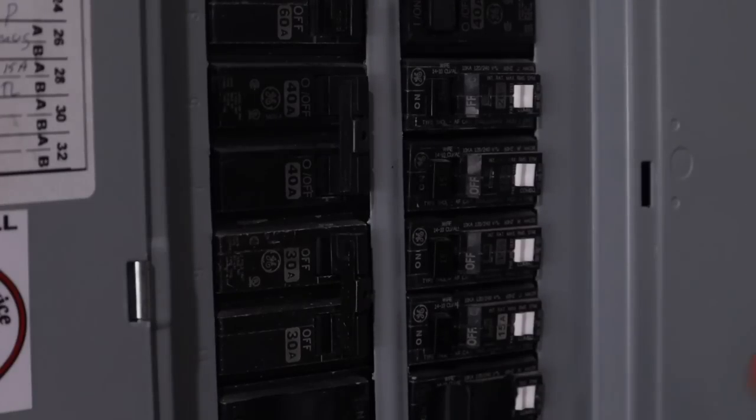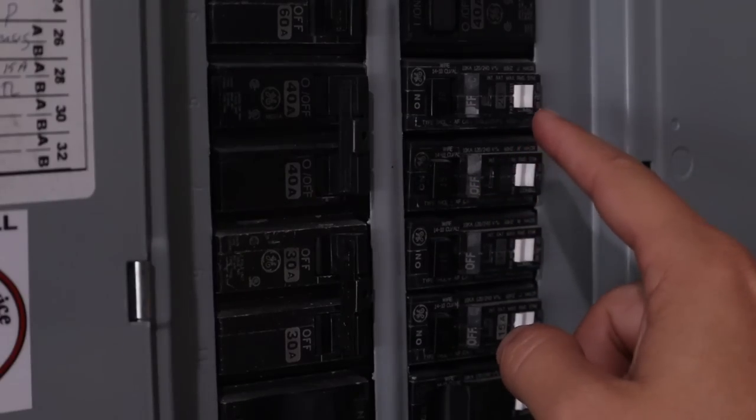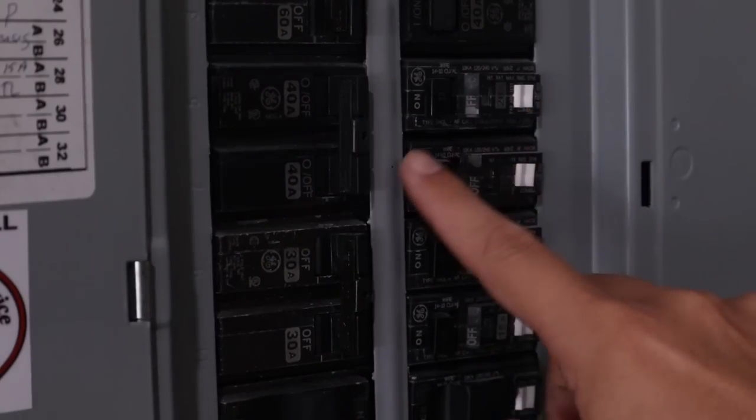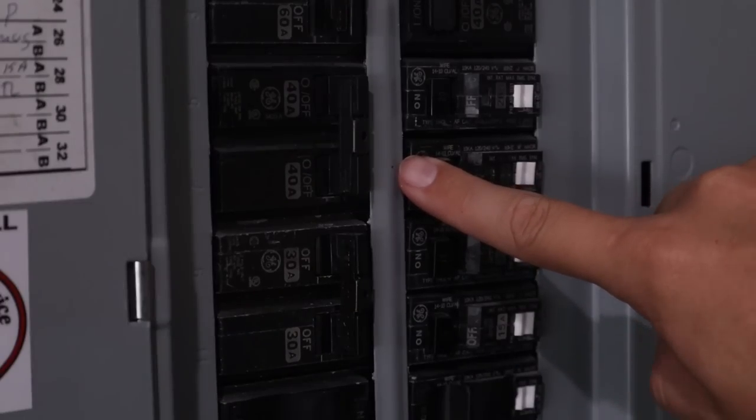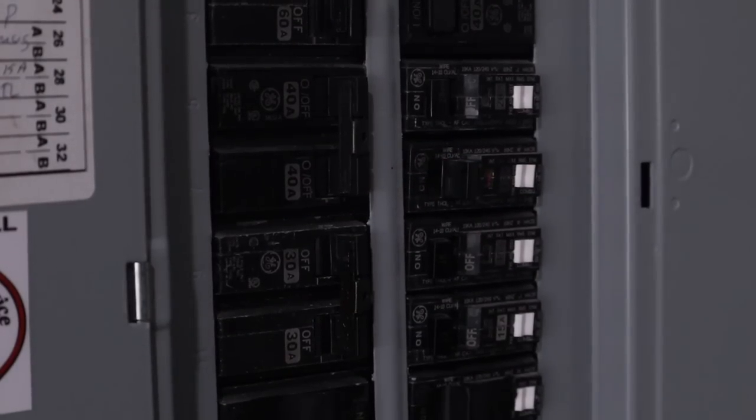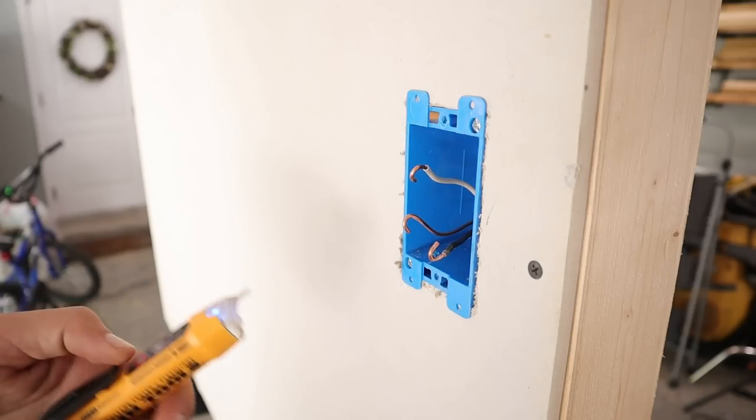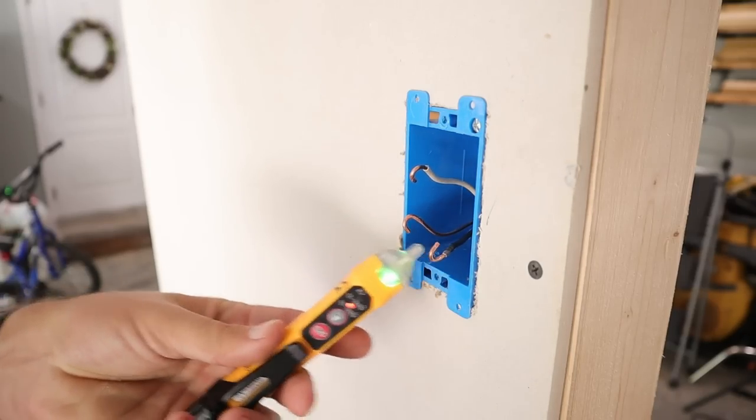Now the first thing that needs to be done before anybody does any electrical work is to make sure that the power is off going to whatever it is that you're working on. So make sure that the circuit breaker is in the off position, and then of course you want to test it just to make sure that you've got the right breaker and it is in fact off.